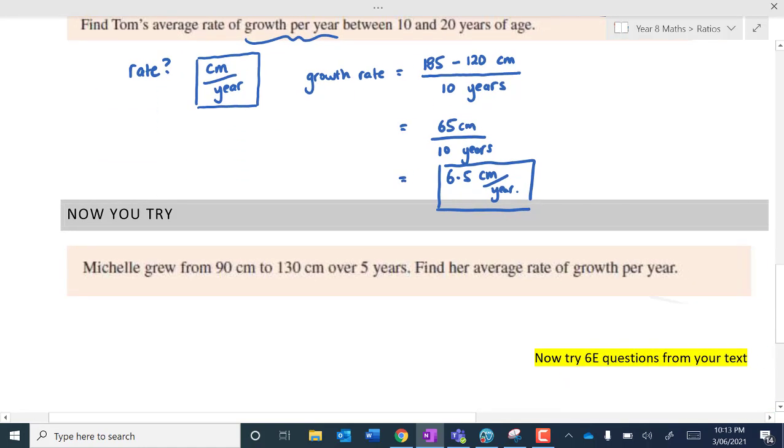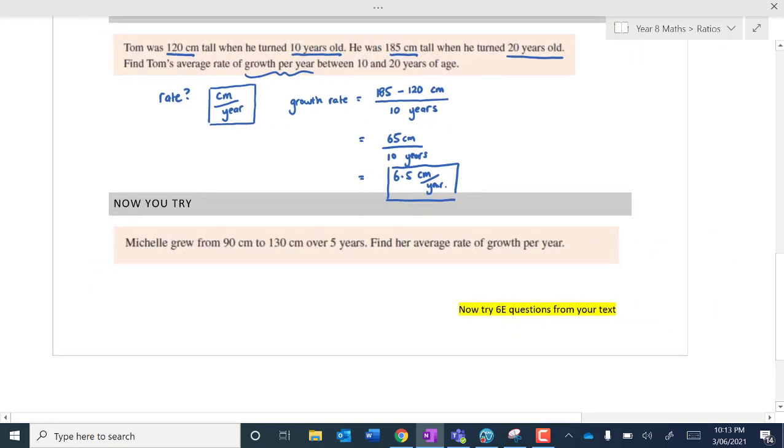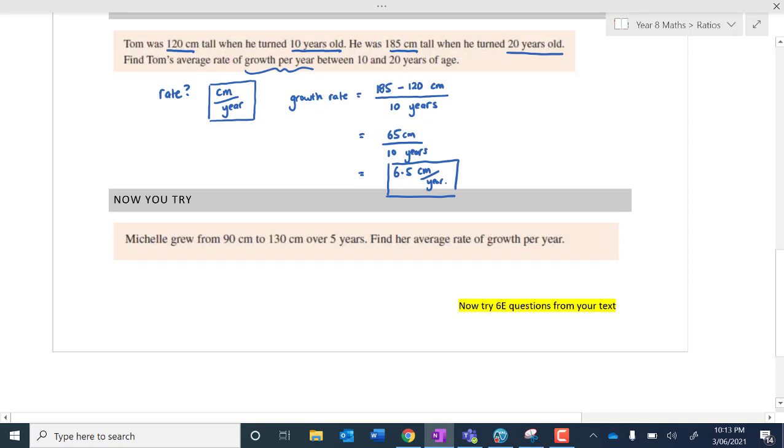Okay, so now, look, this one's really quite a short one, but can I get you just to try this now. Michelle grew from 90 centimetres to 130 centimetres over 5 years. Find her average rate of growth per year. Now, if you're watching this, I'll get you to pause it. Give this one a go now, and then I'm going to reveal my answer soon. So pause it now and have a go at this.